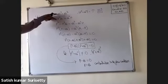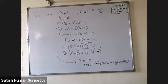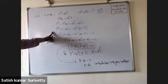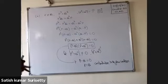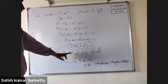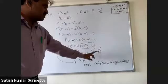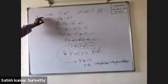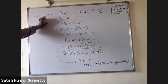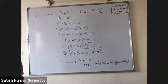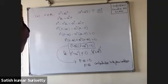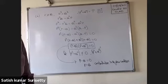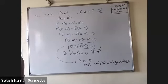Given P cubed equals Q cubed and P squared Q equals Q squared P, subtracting gives P squared common factor times P minus Q, minus Q squared common factor times P minus Q equals zero, so P minus Q times P squared plus Q squared equals zero. Assuming P squared plus Q squared is non-singular, multiply by its inverse on both sides to get P minus Q equals zero, i.e., P equals Q — a contradiction to the given condition. Hence determinant of P squared plus Q squared must be equal to zero.